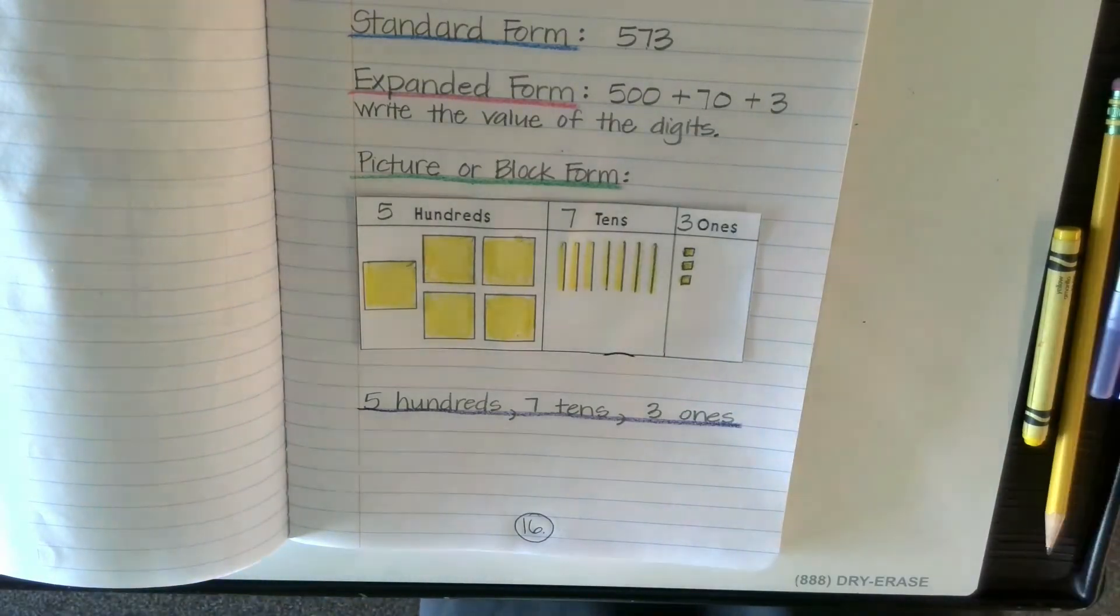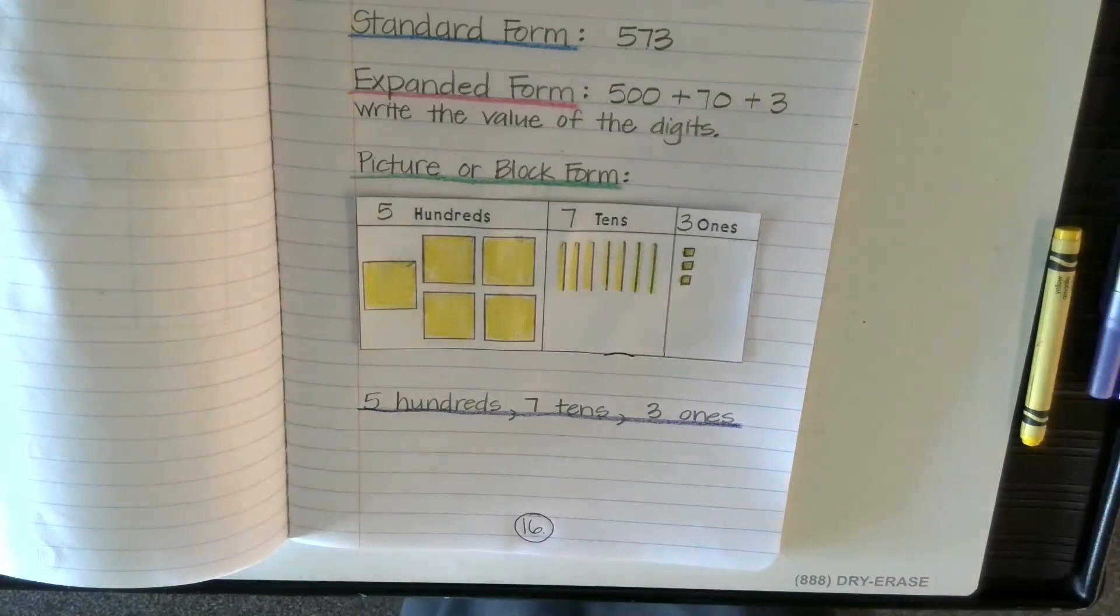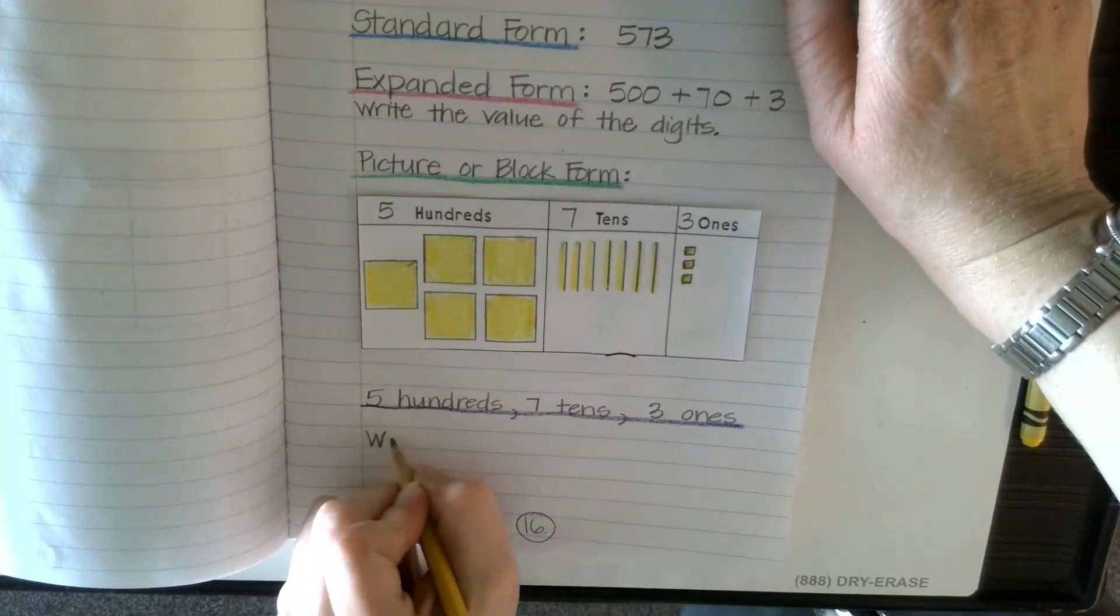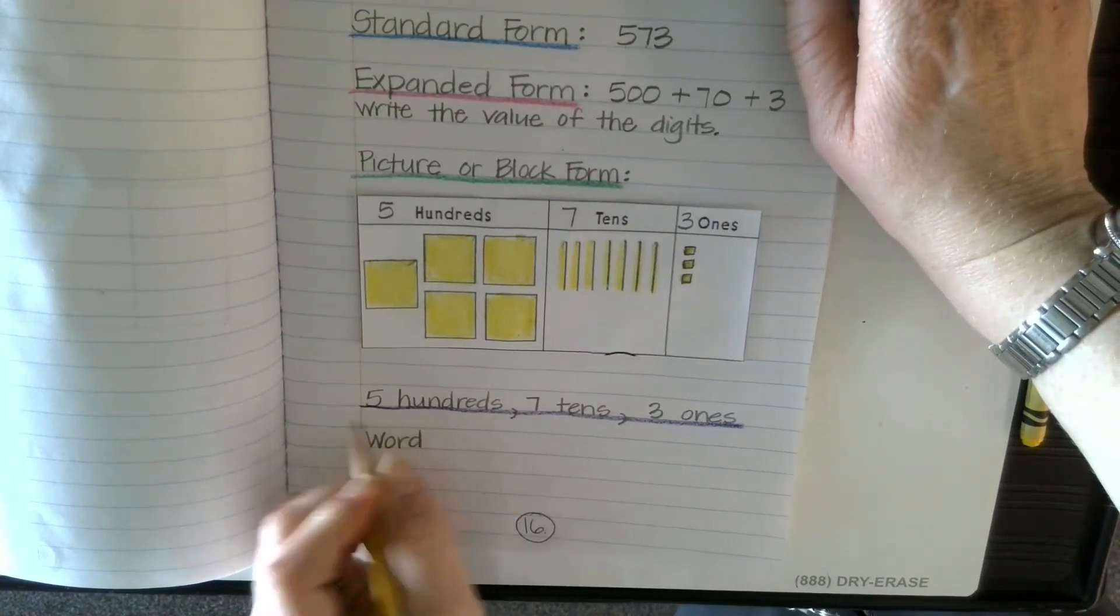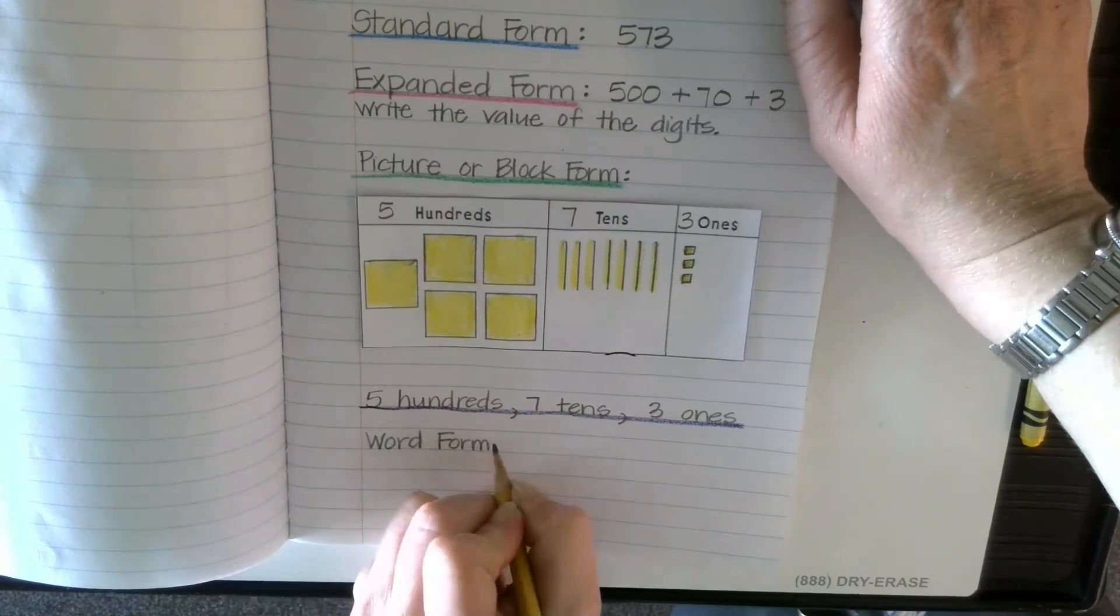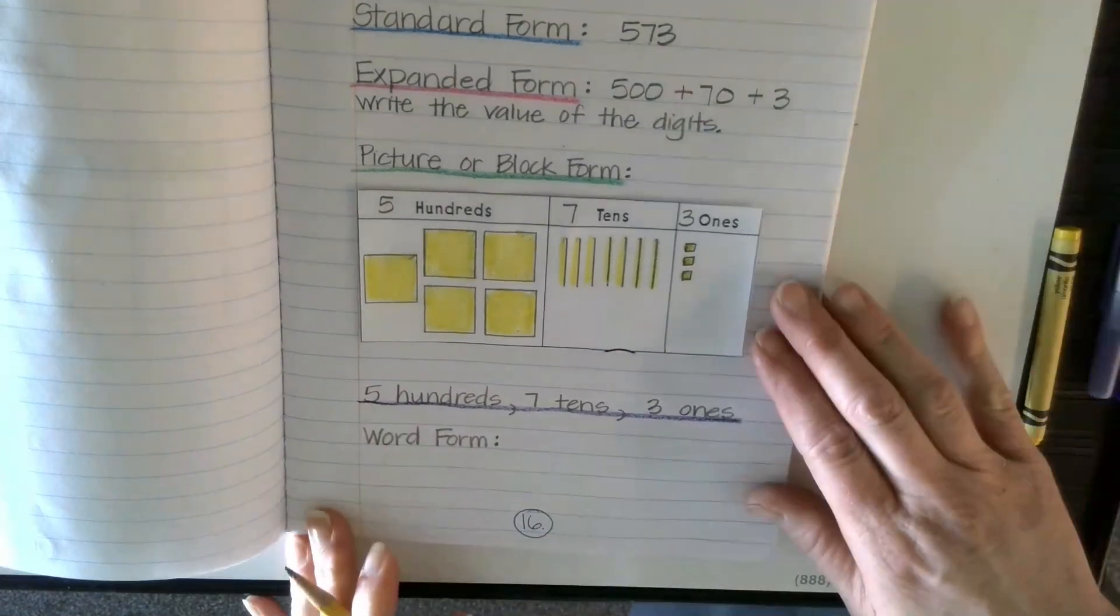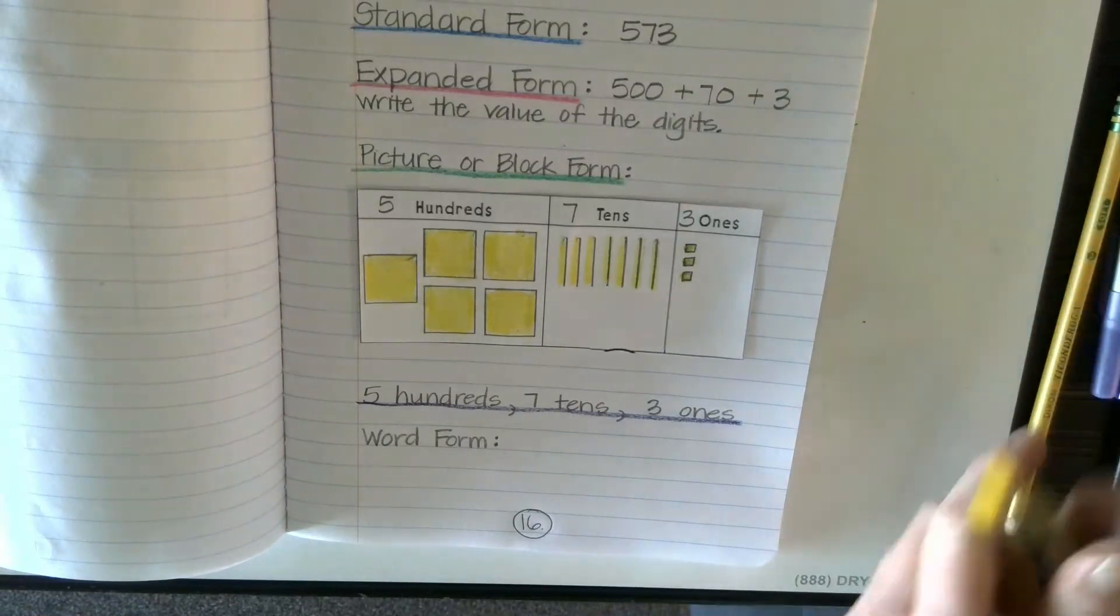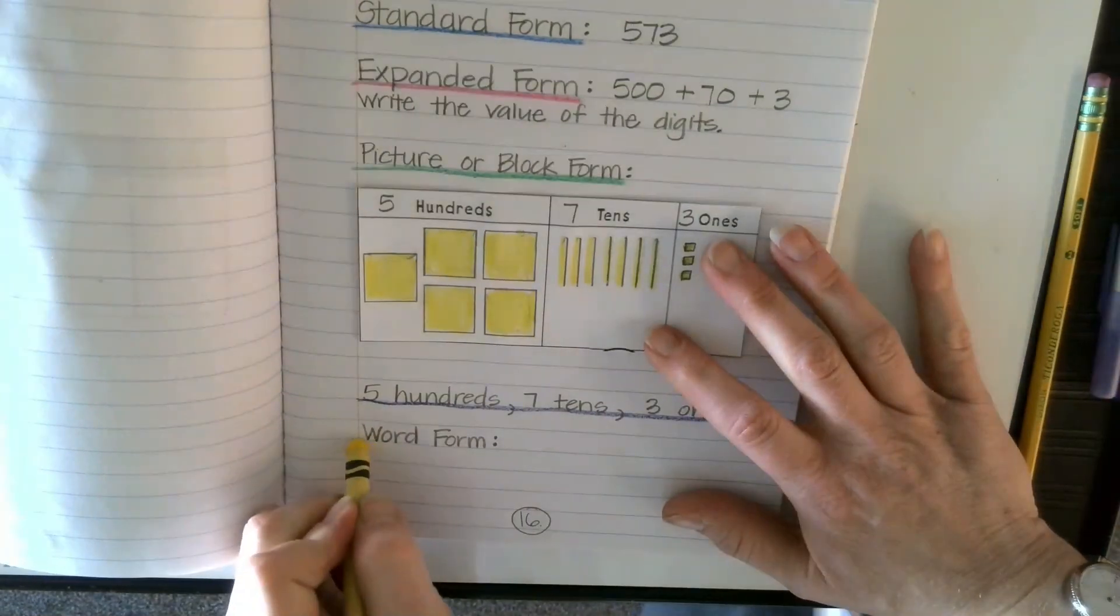And then finally, the last way is word form. So we're going to write word, skip a line, write word form, just going to underline that.